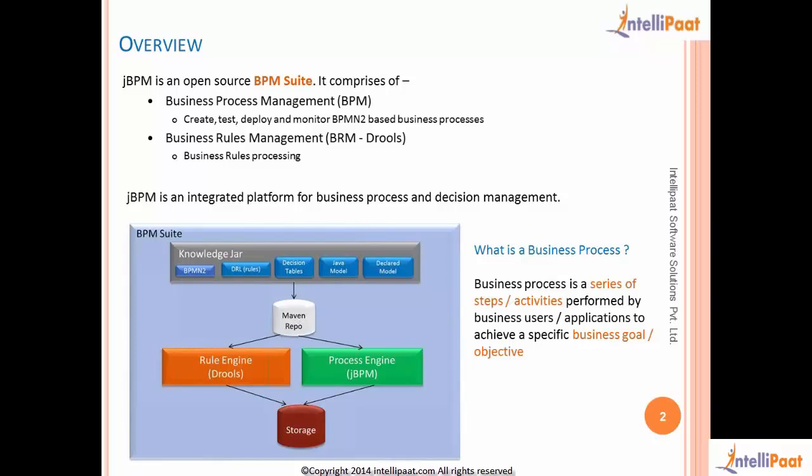With business process management, we will be able to model our business process, execute it, run it, and then monitor what happens throughout the life cycle of each process instance. Using the business rules management, we will be able to externalize the rules from any Java application. It can run standalone, integrated with a Java application, or as part of a business process, where rules can be integrated within the process flow.